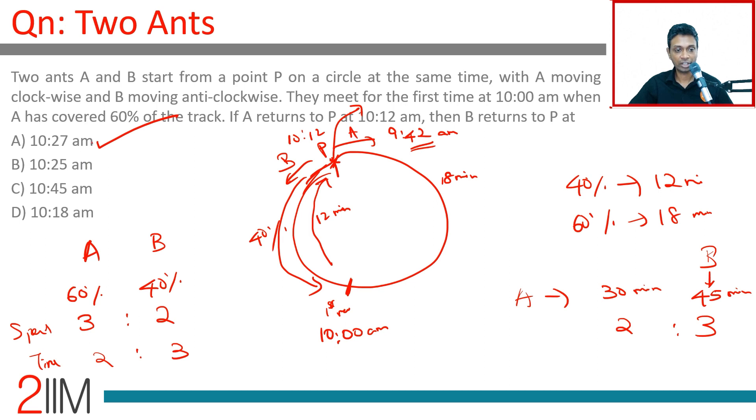Very interesting question - just ratios, nothing more than that. In a lot of these circular race problems where two parts are compared, ratios will take you home completely. Just think in terms of ratios, nothing else is required.